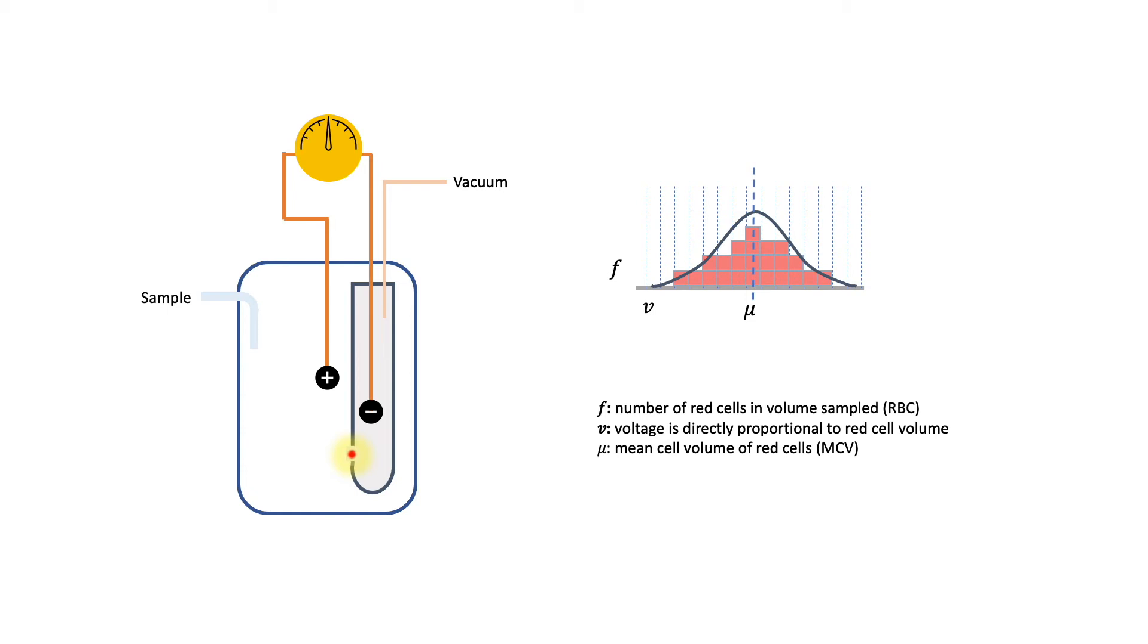This is referred to as the mean cell volume or MCV. Cells with the smaller diameter would appear as events that are on the left of the histogram, i.e. being of low MCV.